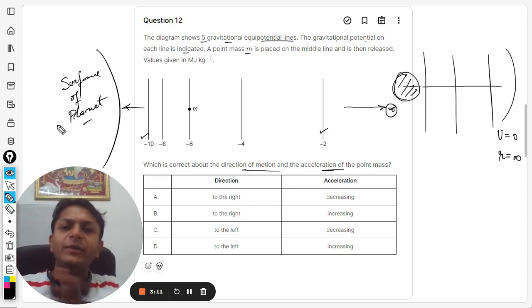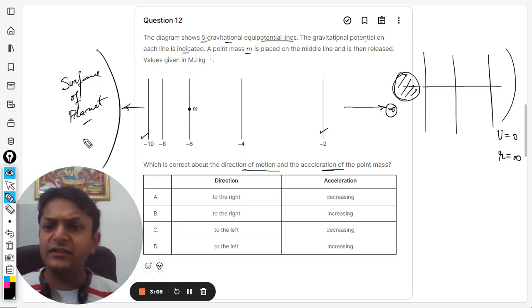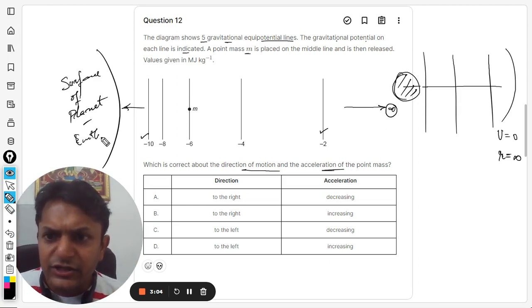So the surface of the planet is on the left-hand side, and the infinite distance is on the right-hand side. Like, let's say this is Earth, so this distance is Pluto.